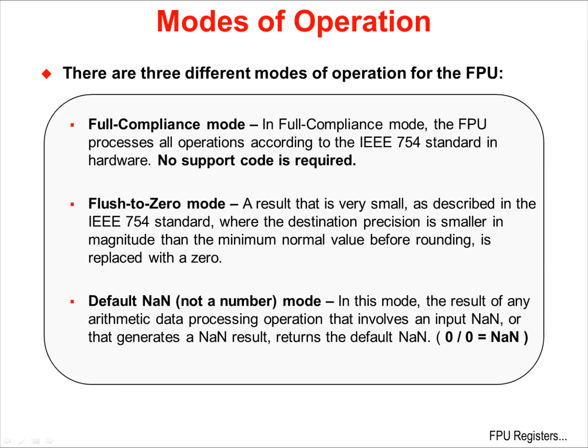There are three different modes of operation for the floating point unit: full compliance, flush to zero, and default NaN. Full compliance mode is where the floating point unit processes all operations according to the IEEE 754 standard in hardware, with no additional support code required. In flush to zero mode, a very small result, as described in the IEEE standard, is replaced with a zero — in most cases, that's probably what you want. NaN stands for not a number. In default NaN mode, the result of any arithmetic data processing operation that involves an input that's not a number, or that generates a result that's not a number, will return the default NaN. If you perform a divide by zero, that's a NaN, or not a number.